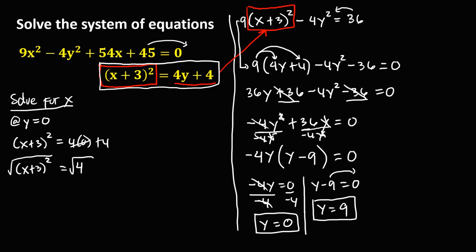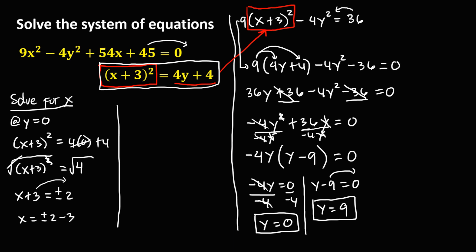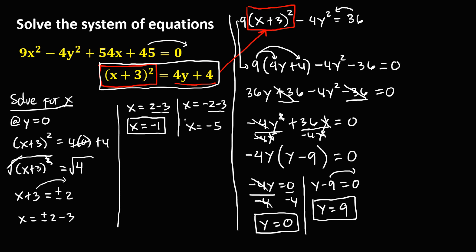So x equals positive or negative 2 minus 3. Therefore x equals positive 2 minus 3, which is negative 1; and x equals negative 2 minus 3, which is negative 5. These are the x values when y equals 0.